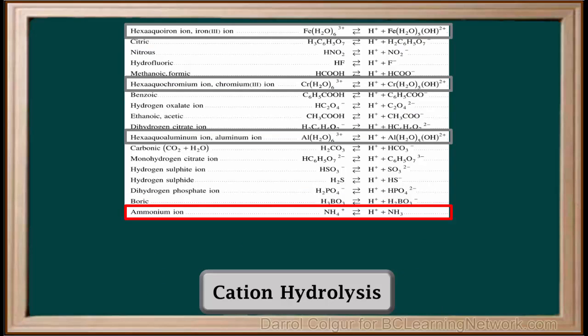The fourth cation hydrolysis equation we can write using the table is the hydrolysis of the ammonium ion, NH4+. NH4+ + water gives H3O+ + NH3.